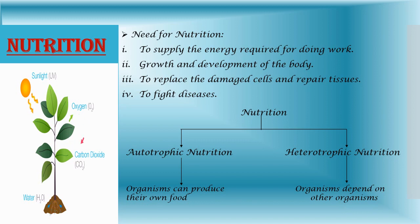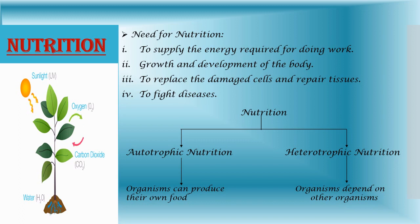Nutrition is necessary to replace the damaged cells and repair tissues, and also to fight diseases. Nutrition is of two types: autotrophic nutrition and heterotrophic nutrition. The organisms which can produce their own food and thus nourish themselves — that is called autotrophic nutrition.